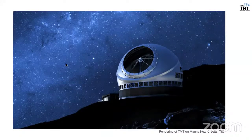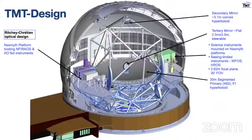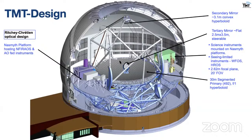Here I show a rendering of TMT on Mauna Kea behind the starry sky, and this is the cross-sectional view of TMT. It's a Ritchie-Chrétien design with a 30-meter primary mirror — a segmented mirror with 492 hyperboloid segments. We have a secondary mirror which is a 3.1-meter convex hyperboloid, and the light from the secondary falls on the tertiary mirror which steers the light into the science instruments sitting on either side of the Nasmyth platform.